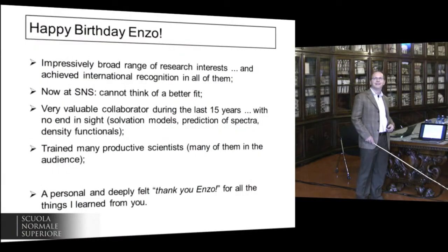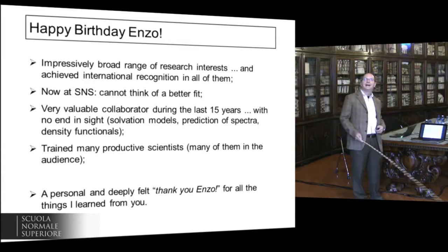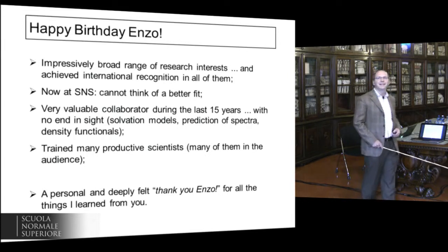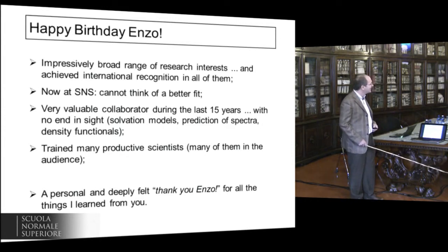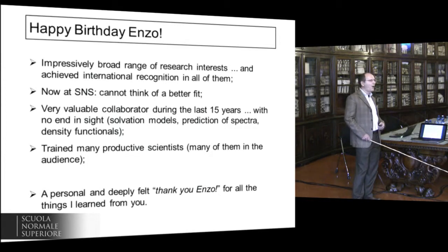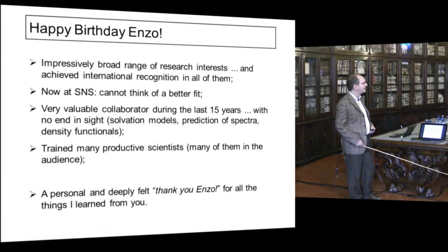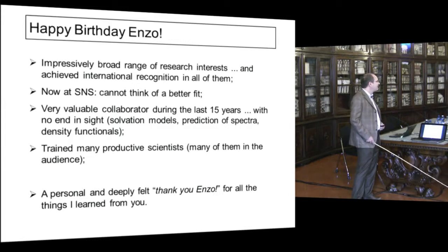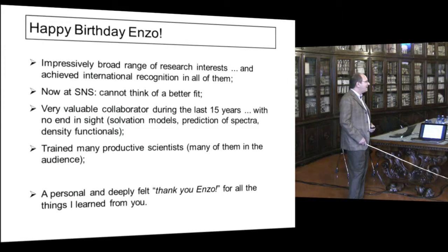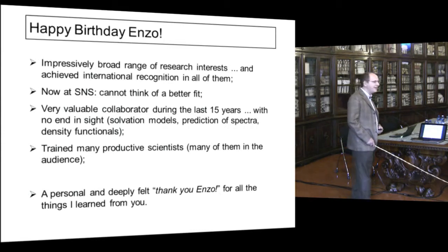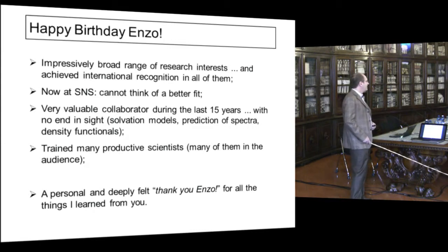First, one slide about the reason why we are here. The first four points are almost verbatim from Mike: he has an impressively broad range of research interests and has achieved international recognition in every single one of them. He has been a very valuable collaborator of Gaussian for 15 years now, and there is still no end in sight. He has trained many productive scientists — many of them are in this audience. And a personal, very deeply felt thank you for everything I learned from you.